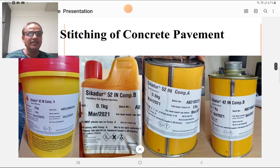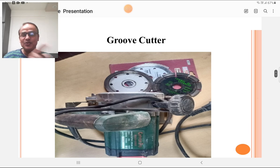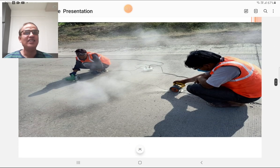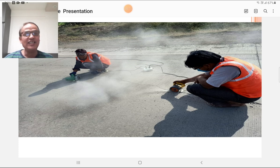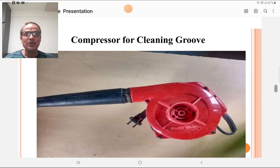For stitching of concrete, various chemicals are used. Shikadur is one of the important companies using various chemicals for stitching of concrete. These are the pictures of Shikadur A and B, two different types of mixes used for this stitching. This is the groove cutter used for making a groove or slot in the longitudinal crack. These are the two laborers who are cutting those grooves into the cracks. A compressor is used for cleaning that groove. The dust in that groove is removed by this type of compressor.